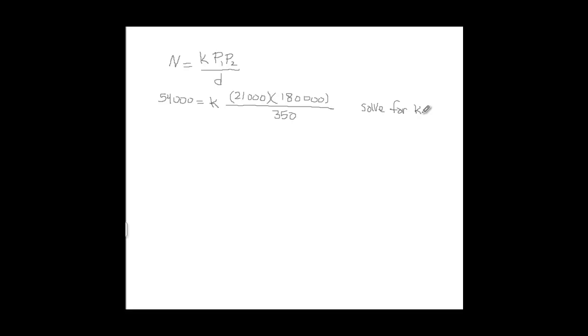So once you know what k is, then you can solve this formula for any variables which is unknown. n is equal to k times p1 times p2 over d, the distance.